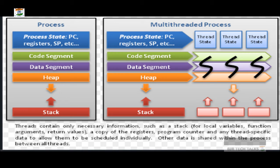This improves performance overall. This figure illustrates the difference between a traditional single-threaded process and a multi-threaded process. If a process has only one atomic job, it is a heavyweight process. If a process contains more than one thread, it uses the multithreading concept, and multi-threaded processes always yield better performance.